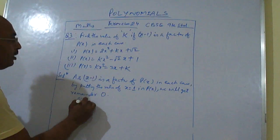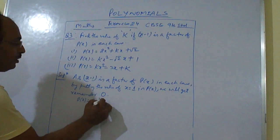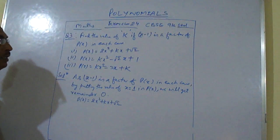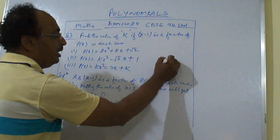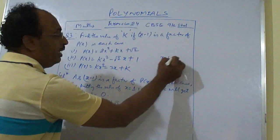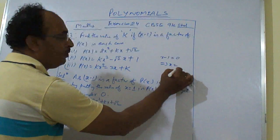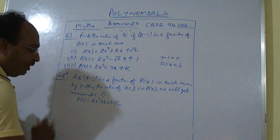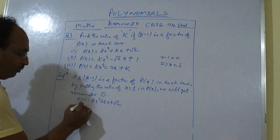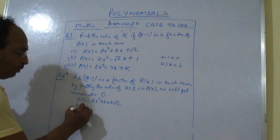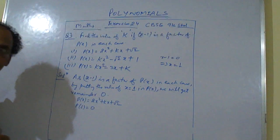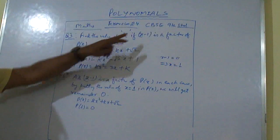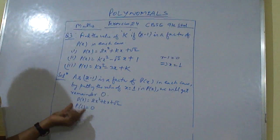So p(x) is equal to 2x square plus kx plus root 2. As x minus 1 is a factor, when we equate it to 0 we get x equal to 1. So p(x) is given to us this one, and we are also given p(1) is equal to 0. When it is told that x minus 1 is a factor, it means p(1) is equal to 0.